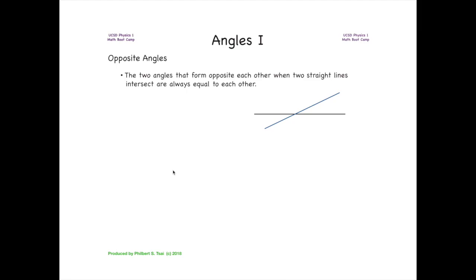The third common geometry you will see is, again, having two intersecting lines, and you are interested in the opposing angles formed by these two straight lines. In this geometry, the two opposing angles are always equal to each other. So if you know one angle over here, you will automatically know the other angle to be equal to that one.